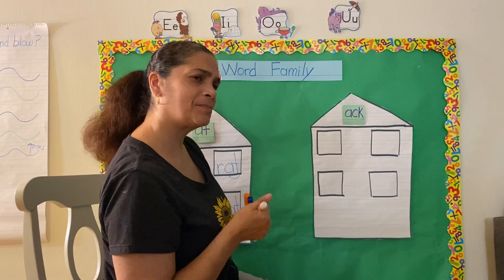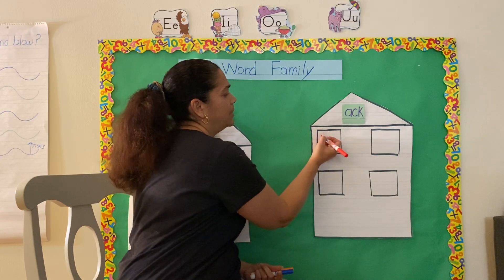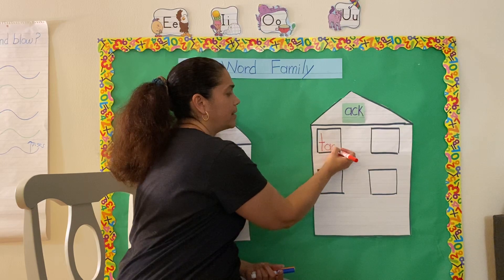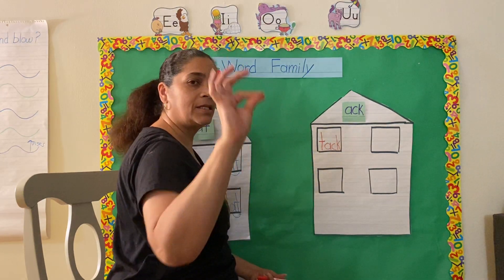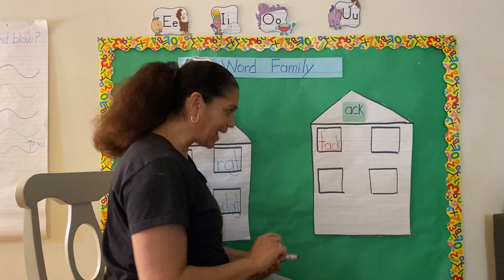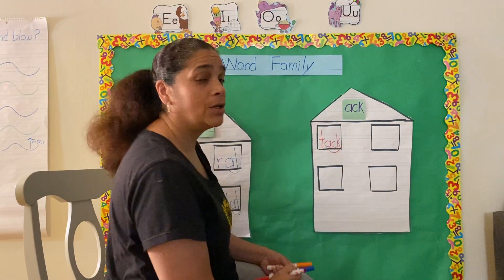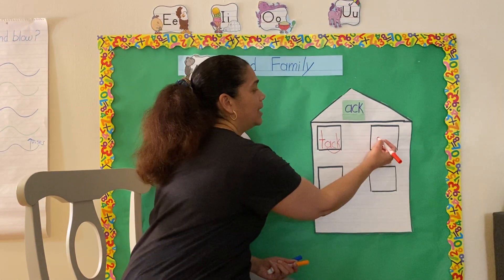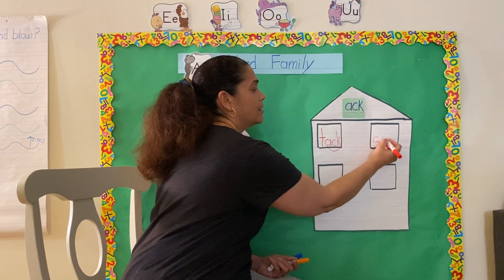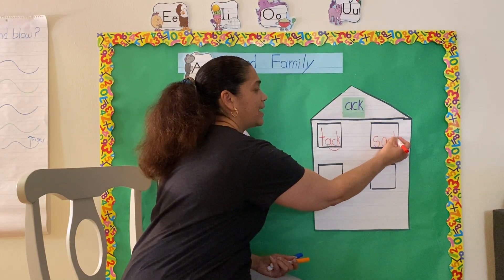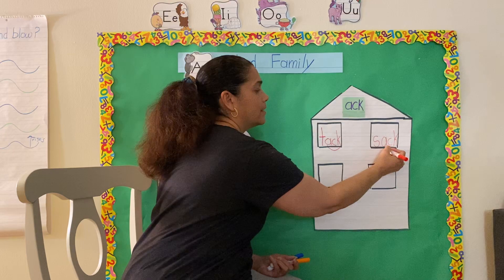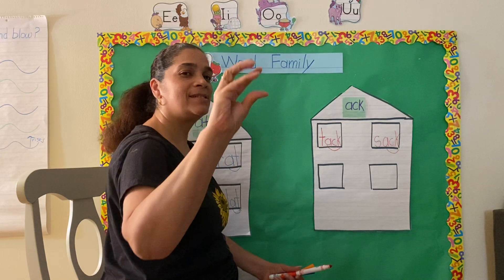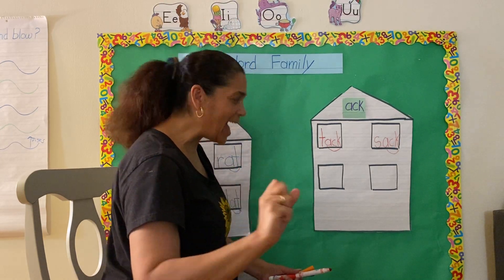So let's try some words. Let's put a T: T-A-C-K. Tack. You don't want to sit or stand on a tack! Let's try an S: S-A-C-K. Now you try that at home. S-ack — blend it together — sack. Very good.